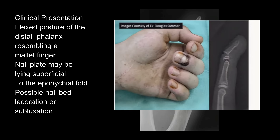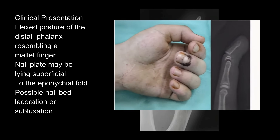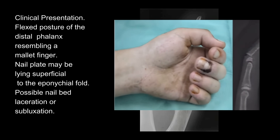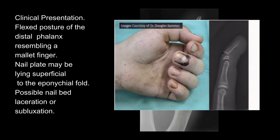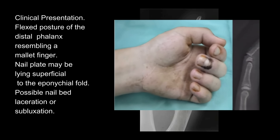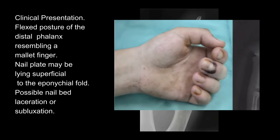Clinical presentation includes a flexed posture of the distal phalanx resembling a mallet finger. The nail plate may be lying superficial to the eponychial fold, with possible nail bed laceration or subluxation.